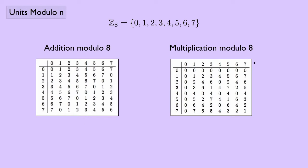But multiplication modulo 8 has a problem. Our identity element here would be 1, and that kind of meets the conditions for an identity element. But not every element has an inverse — for instance, 2 times nothing here gives us 1. So that's a problem.